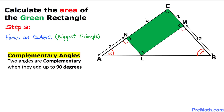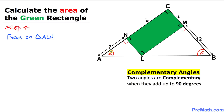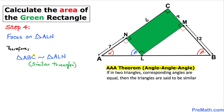Two angles are complementary when they add up to 90 degrees. Now let's focus on the smallest triangle ALN up here. As we can see, this is also a right angle triangle — 90 degrees — and one of the angles is alpha, so the complement must be beta. Therefore we conclude that triangle ABC and triangle ALN are similar triangles, according to the angle-angle-angle theorem: if corresponding angles in two triangles are equal, the triangles are similar.